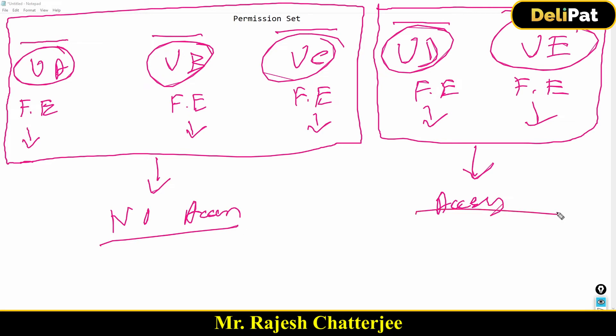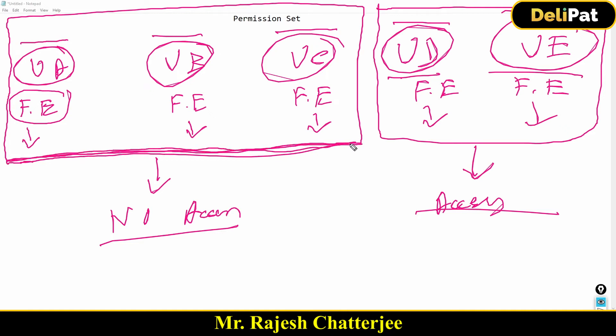How do you do it? Should you, as an admin, go and remove the 'Create and Customize Report' access from the profile? Or should you create two separate profiles for these two users? No — that's not going to work. Such requirements come very frequently, and as an admin you won't keep creating new profiles for small changes. The problem is: I don't want three users to create reports, but I do want these two users to — even though the current profile gives all five users that permission.